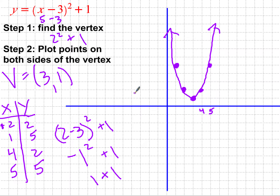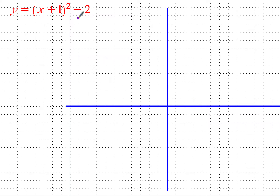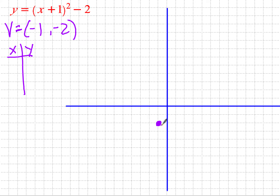One trick: if there's no a value in front, the pattern from the vertex is always up one over one, then up three over one after that. Let's graph y equals (x plus one) squared minus two. The vertex is at negative one, negative two — the opposite of h, which is plus one, so x equals negative one; k is negative two. I'll make an x-y table using x equals zero and x equals one.